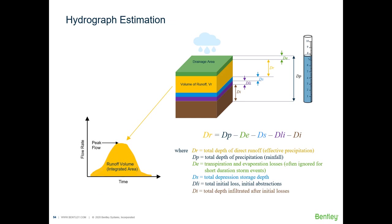You start with total depth of precipitation, then subtract evaporation, storage, initial losses, and infiltration. What you're left with — shown here in yellow — is what we call effective precipitation or depth of runoff. Multiplying this depth times the catchment area gives you the total volume of runoff.